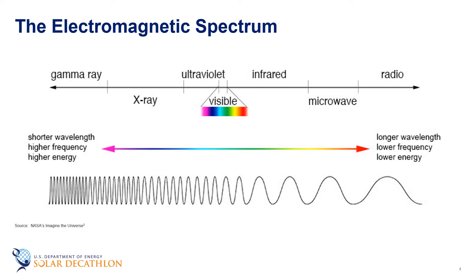The lower frequency, lower energy radiation includes infrared, microwave, and radio waves. The higher frequency, higher energy radiation includes ultraviolet, X-ray, and gamma radiation. Certain portions of this spectrum can get absorbed by the Earth's atmosphere, but much of it makes it to ground level and passes through windows, and we have to consider this when looking at window performance.